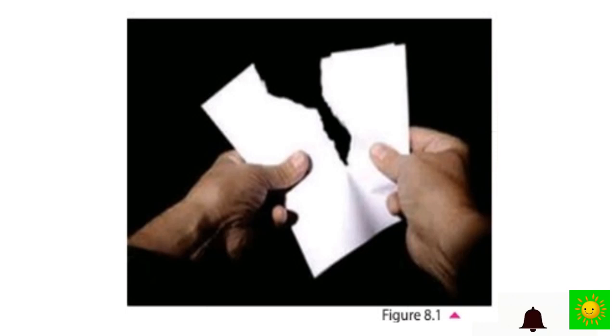Our subtopic is physical changes and chemical changes. Tear a paper into small pieces. The paper is torn into pieces, but it is still paper. When tearing a paper, its composition is not subjected to any change. Something which is not paper cannot be formed by tearing the paper. Therefore, such changes are known as physical changes.